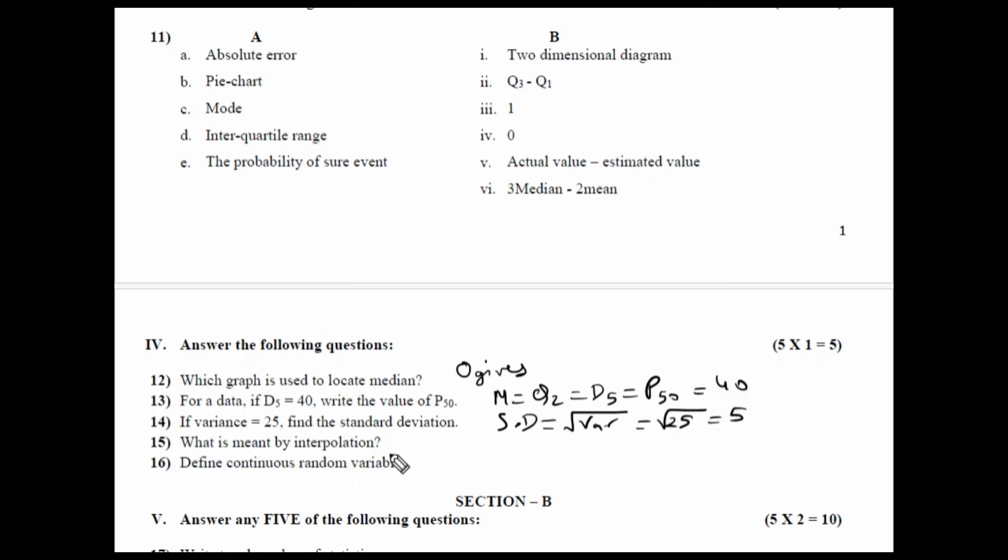What is meant by interpolation? Here you have two variables x and y. Suppose x is an independent variable and y is a dependent variable. The estimation of the value of dependent variable for a given value of independent variable within the range. For example, if your x value is from x naught, x1, up till x10 and your y value is also y naught, y1, up till y10 and one of the value is missing, say fifth value of x is missing or for fifth value of x, the y value is missing. Estimating that value is called as interpolation or within the range.